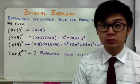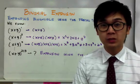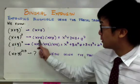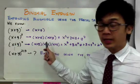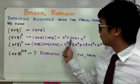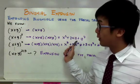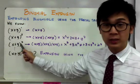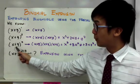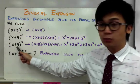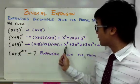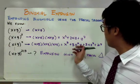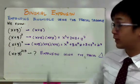If we have x plus y raised to the second power, we need to multiply x plus y by itself twice. So we'll have x plus y times x plus y, and using the FOIL method we'll have x squared plus 2xy plus y squared. And if we have x plus y raised to the third power and we multiply it by itself 3 times, we'll have x cubed plus 3x squared y plus 3xy squared plus y cubed.